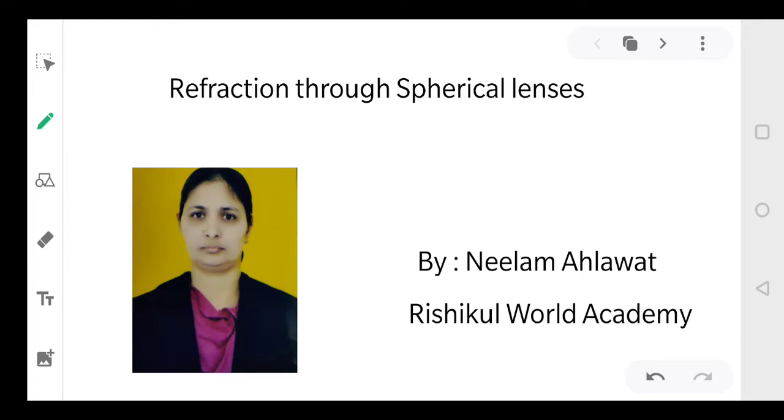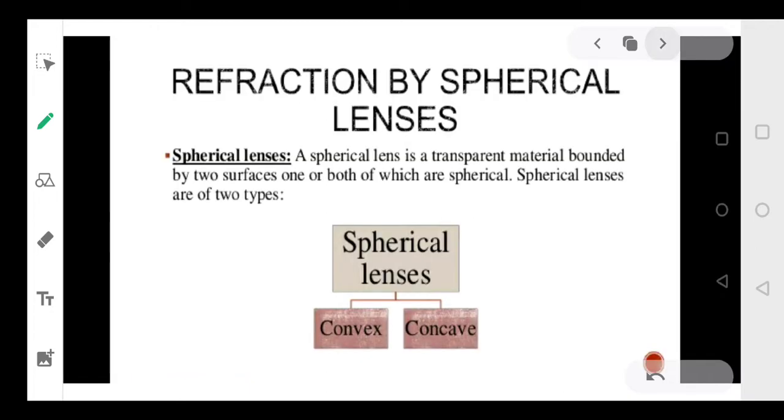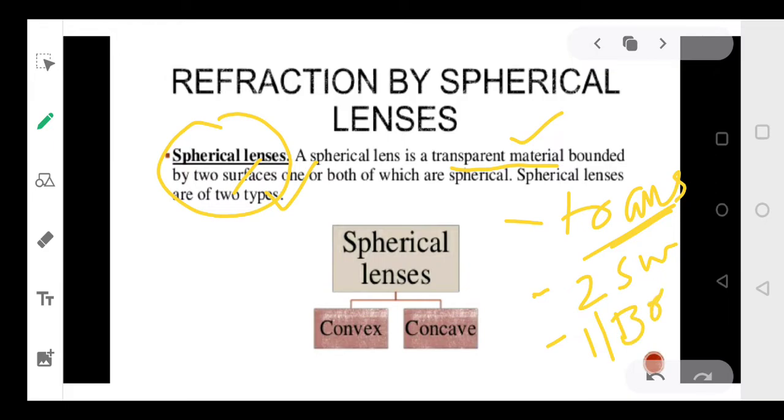Now keep your pens, books, and notebooks ready. We'll start with our lecture on refraction through spherical lenses. Before we start, we should know what is a spherical lens. A spherical lens is basically a transparent material and it will have two surfaces, either one of them could be spherical or both of them could be spherical. So three important points: one, it is a transparent material; second, it has two surfaces; and third, one or both of which are spherical.